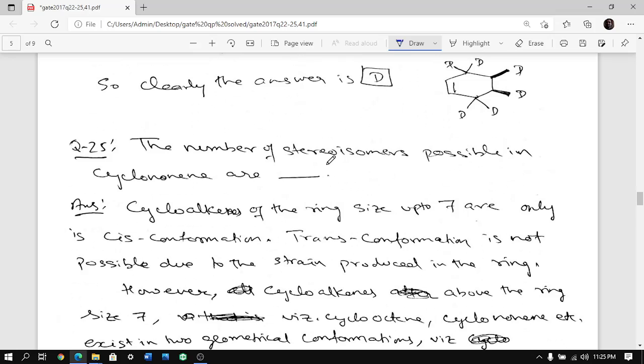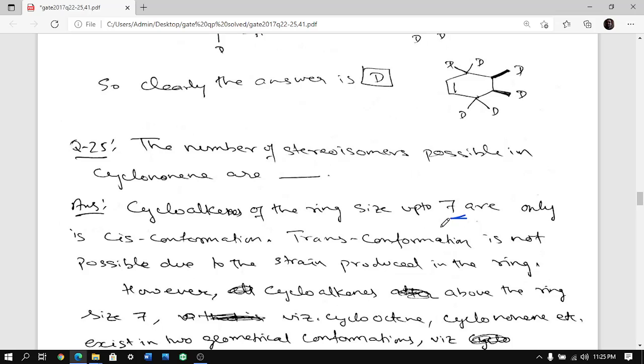Moving to the next question. The number of stereoisomers possible in cyclononene. So if cycloalkenes are there - something like cyclopropane, cyclobutane, cyclopentane up to seven - they can exist only in cis conformation. They cannot exist in trans because too much strain will happen.